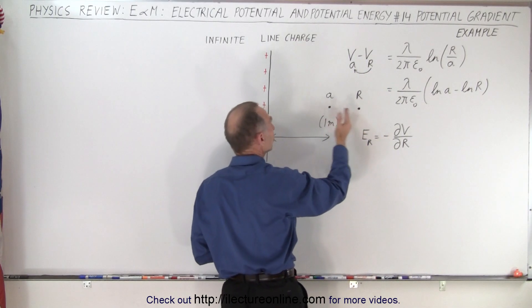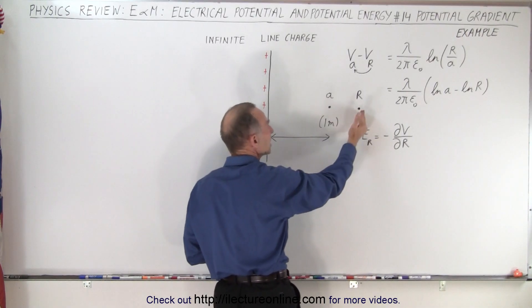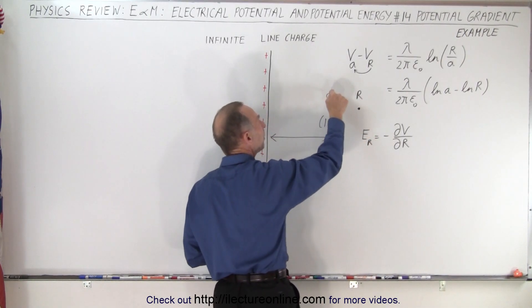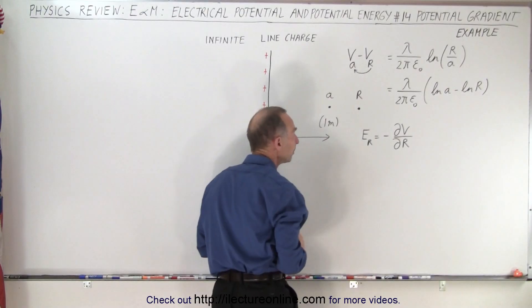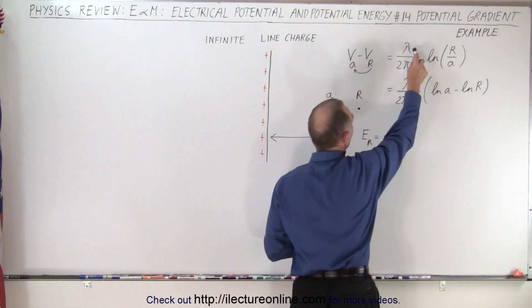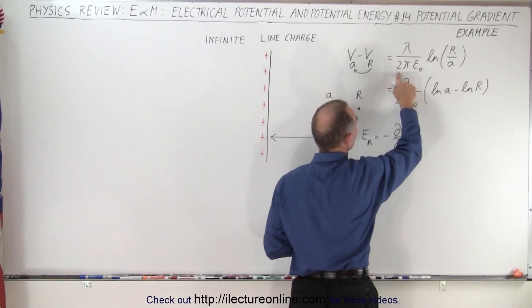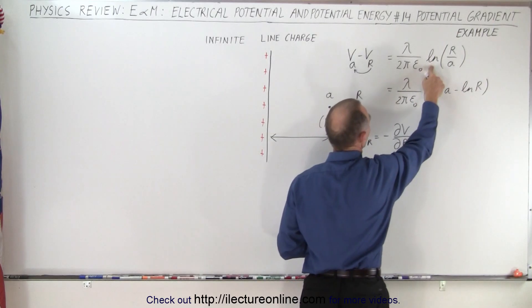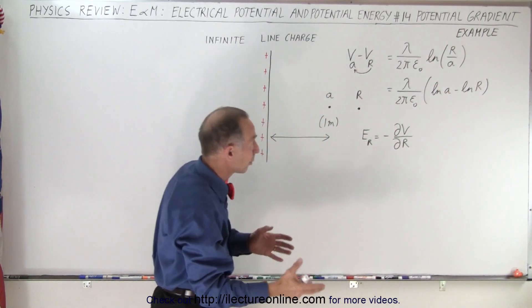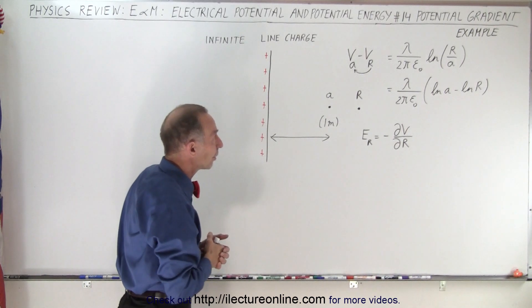Going from here to here we go closer to the positive charge, meaning that the potential will go up. So we'll have a positive potential. That's defined as the linear charge density divided by 2πε₀ times the natural log of R over A, R being bigger than A. And that's what we got in a previous video.